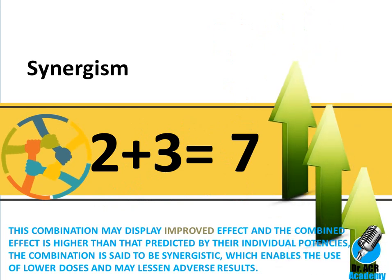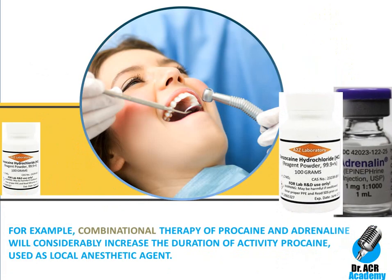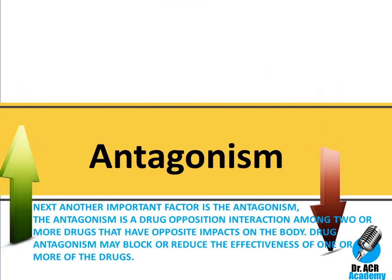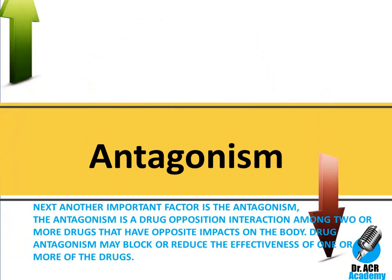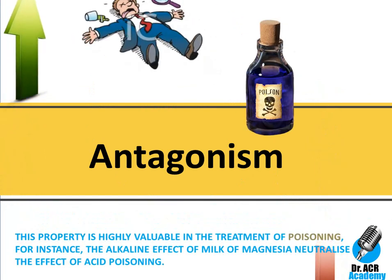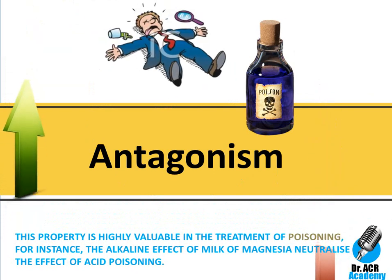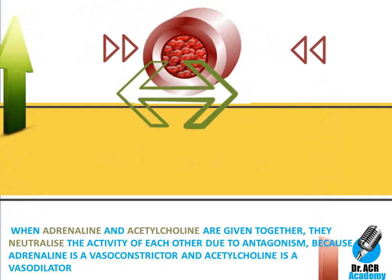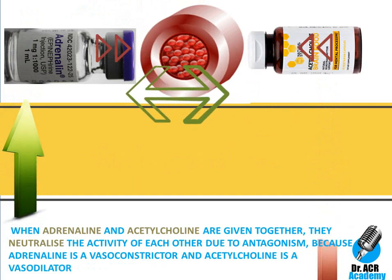Another important factor is antagonism. Antagonism is a drug opposition interaction among two or more drugs that have opposite impacts on the body. Drug antagonism may block or reduce the effectiveness of one or more drugs. This property is highly valuable in the treatment of poisoning. For instance, the alkaline effect of milk of magnesia neutralizes the effect of acid poisoning. When adrenaline and acetylcholine are given together, they neutralize each other due to antagonism, because adrenaline is a vasoconstrictor and acetylcholine is a vasodilator.